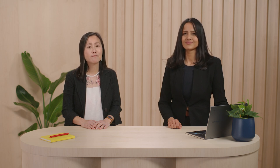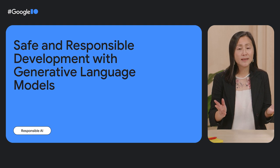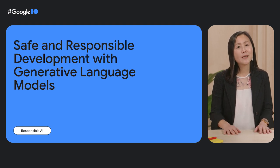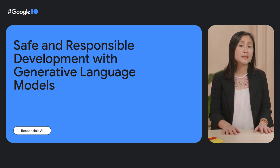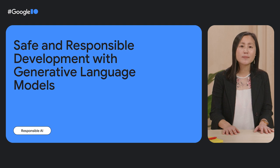As generative language models become more and more available to developers such as Google's own Palm API, we're really excited to help you build your own applications on top of this technology. There's a lot of ongoing research in the area of responsible development, on what safety and responsibility even mean. What we'll talk about today is a small picture of some responsible approaches in a much bigger, much more complicated space of what all can be done to build responsibly toward a safe product for everyone.